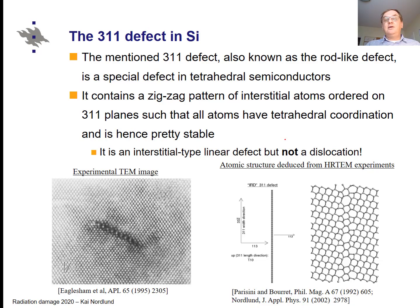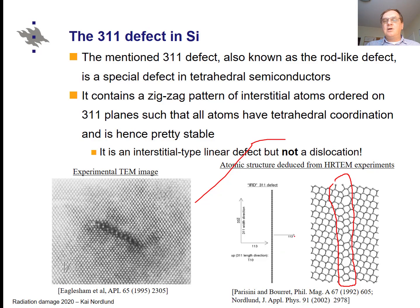The {311} defect has not been mentioned before in the course and it is quite a special defect, existing in tetrahedral semiconductors but not at all in metals. It has a complex geometry: it contains zigzag patterns of interstitial atoms ordered on {311} planes so that all atoms have tetrahedral coordination, making them pretty stable. In the image you can see a complex network of extra atoms, and these extra atoms lie in the 〈113〉 direction — that is, the direction perpendicular to this plane of atoms is the 〈113〉 direction.